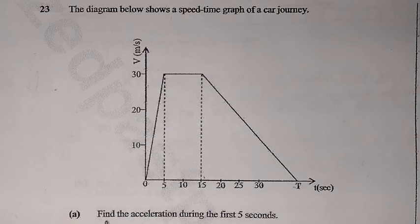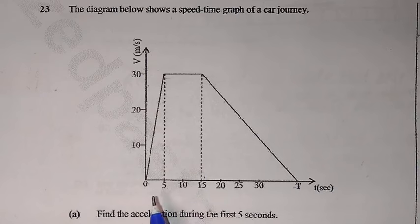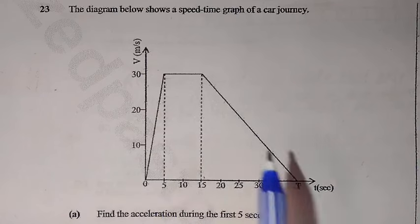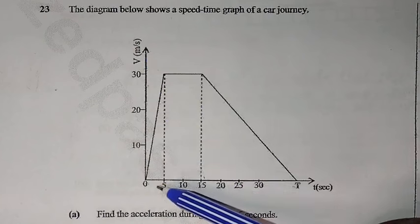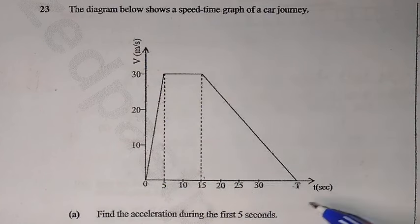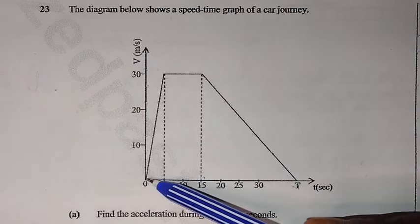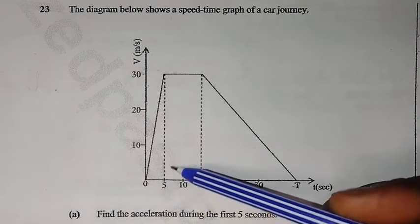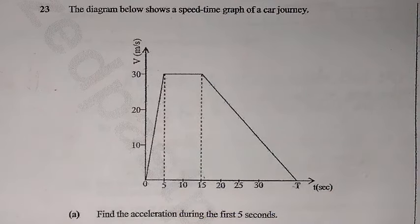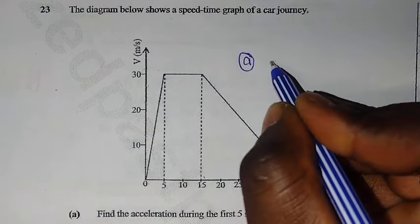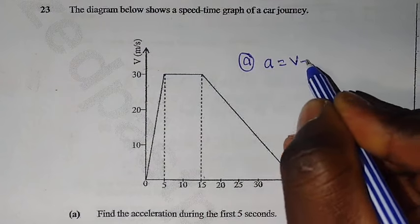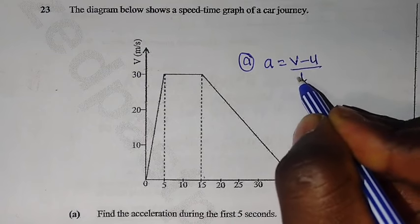Question A: find the acceleration during the first five seconds. On the vertical axis, we have speed measured in meters per second, and on the x-axis, we have time measured in seconds. We are going to use the formula: acceleration is equal to final velocity minus initial velocity over time.